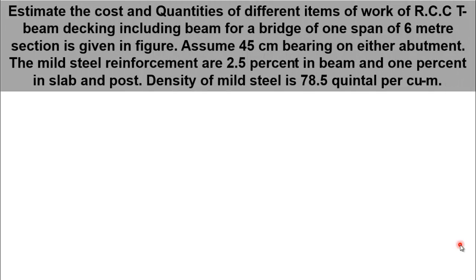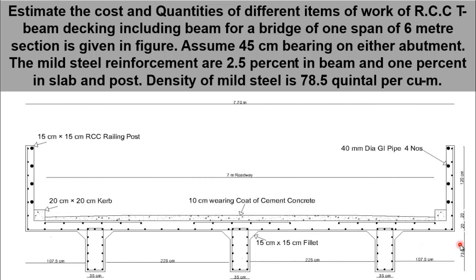To learn quantity estimation of a bridge efficiently, we have selected an example that states: estimate the cost and quantities of different items of work of RCC T-beam decking including beam power of a bridge of one span of 6 metres. A section is given in the figure. Assume 45 cm bearing on either abutment. The mild steel reinforcement is 2.5% in beam and 1% in slab and post. Density of mild steel is 78.5 quintal per cubic metre.